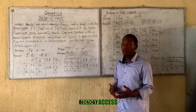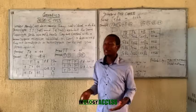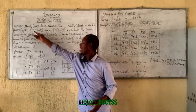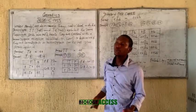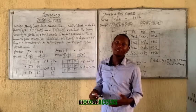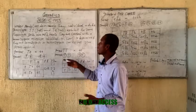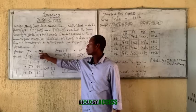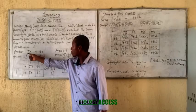Under Mendelian law, a pea plant that is tall can be homozygote for the trait or heterozygote for the trait. In that case, how do we know if it's homozygote or heterozygote? So you carry out a test cross — you cross the pea plant with a recessive, or short, pea plant that is homozygote recessive for that trait.